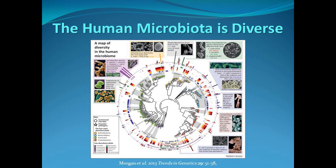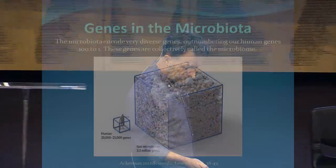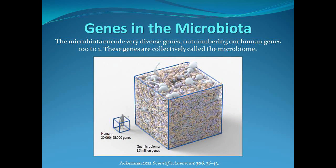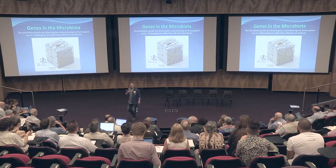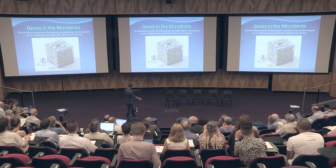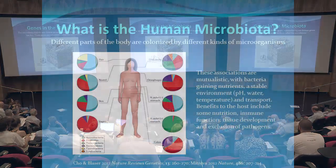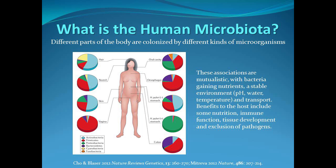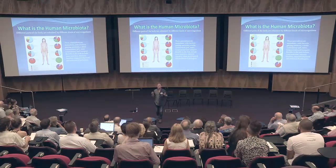This microbiota is diverse. This is a family tree of the kinds of things that live in us and on us - every single end of those branch points is a different species or genus. The genes in these things vastly outnumber the human genes we have, giving you a sense of how big this resource is.